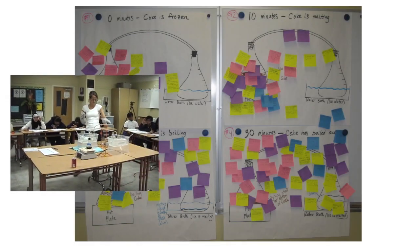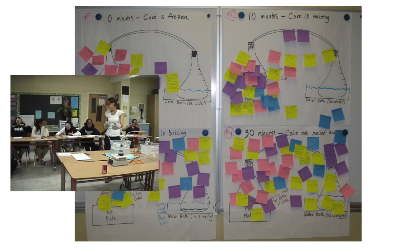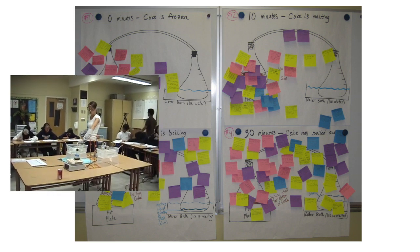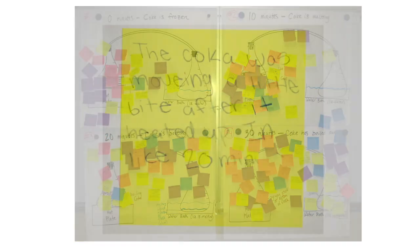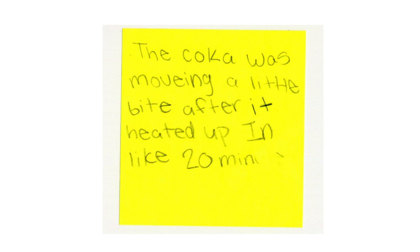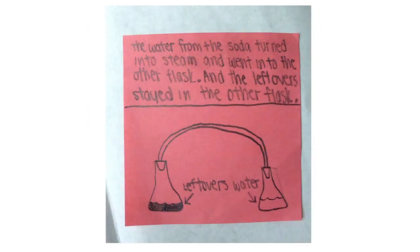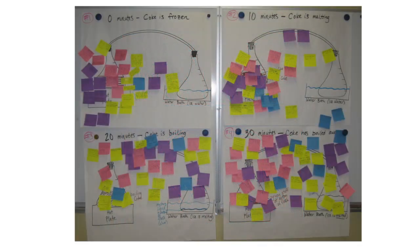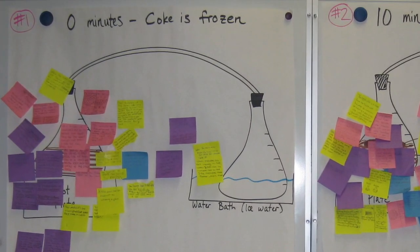In Anna's seventh grade class, she uses a tool called a whole-class consensus model. She has drawn a time-lapse representation of the distillation apparatus the class had used to separate out parts of a soft drink. She asks students to offer snippets of an explanation to be written on sticky notes, which are affixed to the model in the right place and at the right time. Anna not only sees what language they are using to describe what's happening, but also notices after class that very few students have ventured to explain what is happening in the right-hand flask or in the tubing in the early stages of distillation.